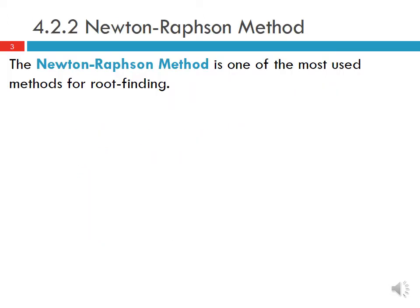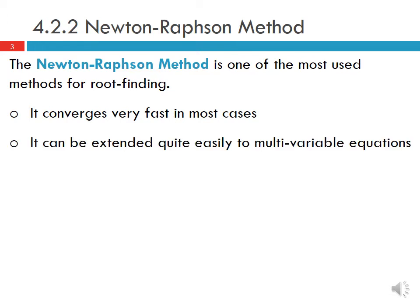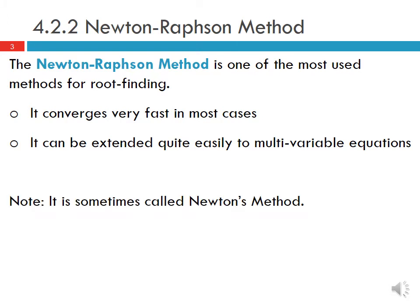The Newton-Raphson method is one of the most used methods for root finding. The reason for its success is that it converges very fast in most cases, and it can be extended quite easily to multivariable equations. Note it's sometimes called Newton's method, or the Newton-Raphson method.